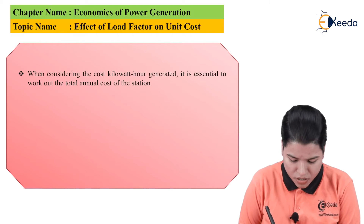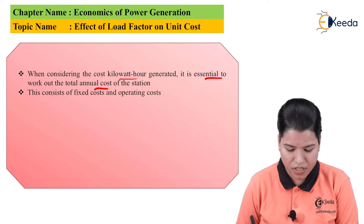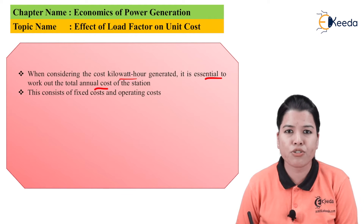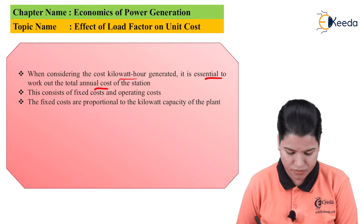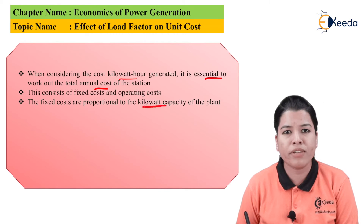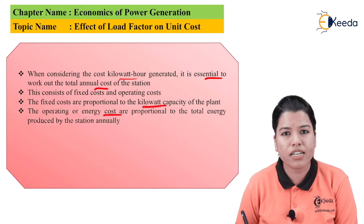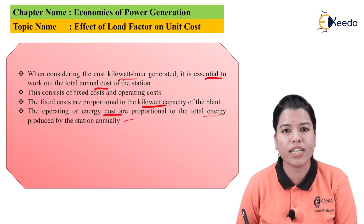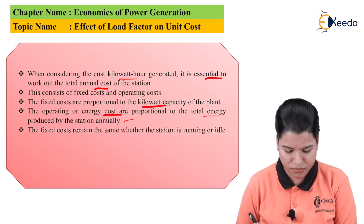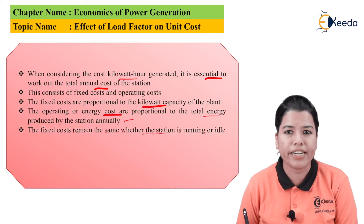Now while considering the cost per kilowatt-hour generated, it is essential to work out the total annual cost of a particular station. This consists of two costs: one is the fixed cost and the second is the variable cost. The fixed costs are generally proportional to the kilowatt capacity of that particular plant. Operating or energy costs are considered to be proportional to the total energy produced by the station annually. The fixed cost will remain fixed whether the station is working or it is in the idle condition.